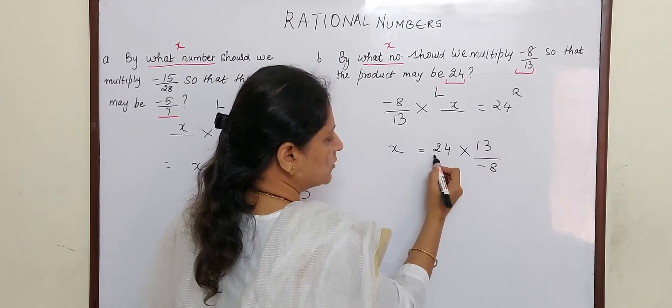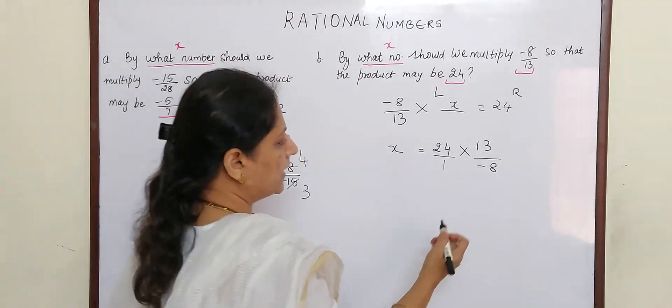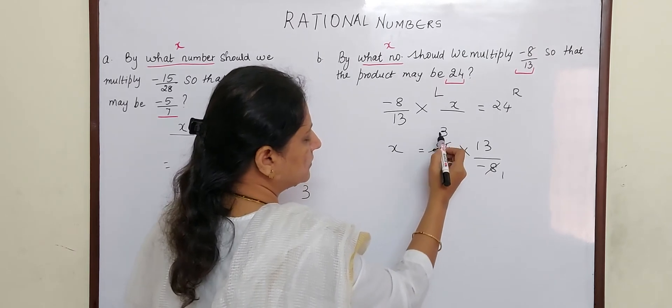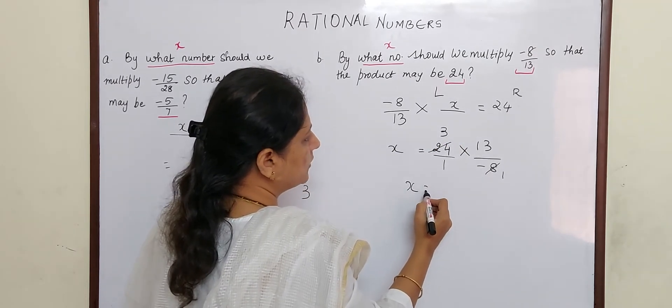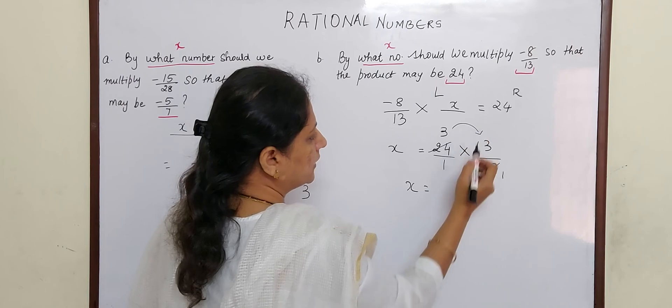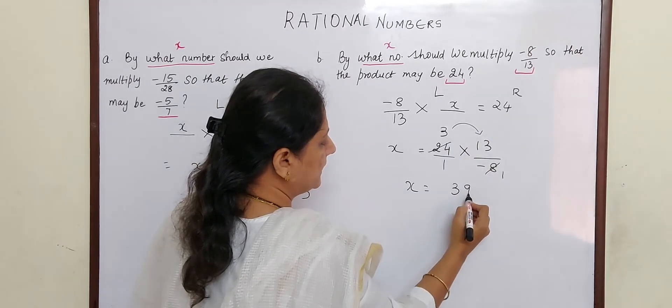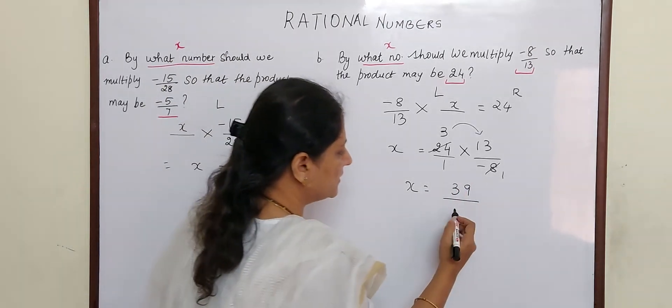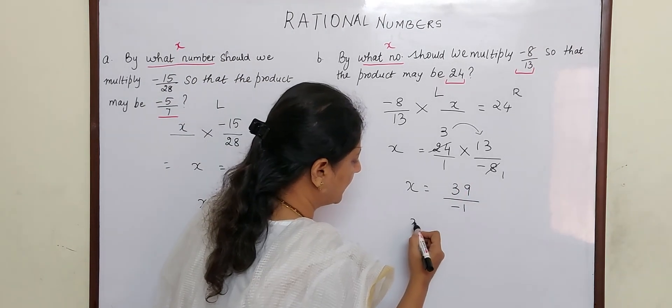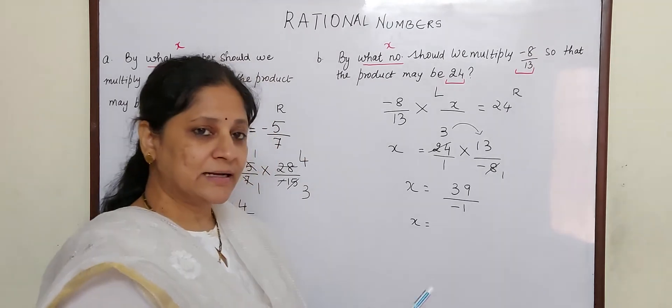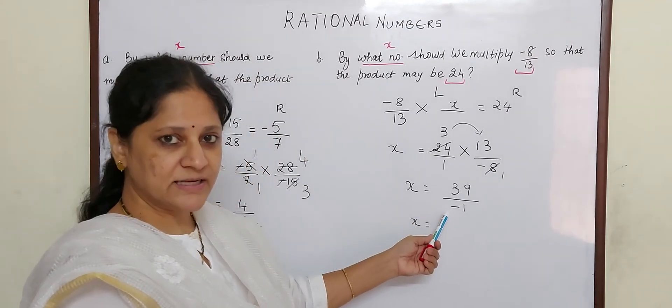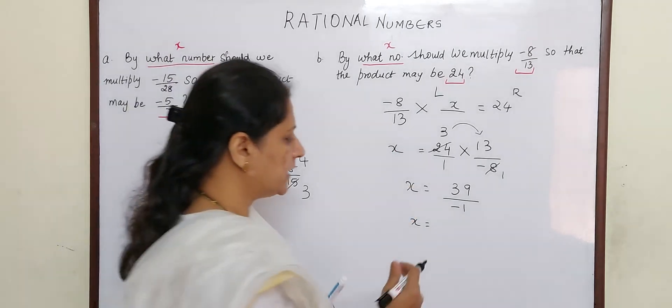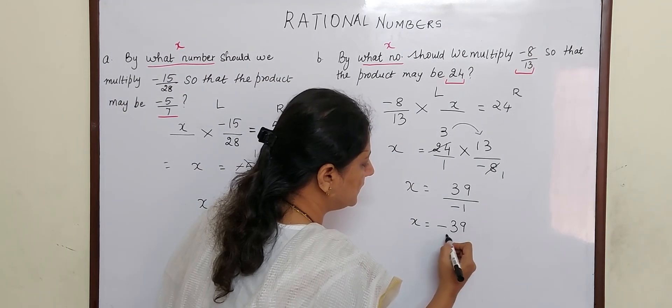Now suppose there is no number here, just put 1. Now 8 into 1 is 8, 8 into 3 is 24. So x is equal to 3 into 13, that is 39, and here it is 1 into 1, but minus sign is there, so -1. And what have we learnt? That if there is a negative sign in the denominator, we will always push it to the numerator. So the answer is -39.